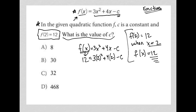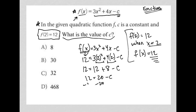Let's simplify. I have 12 equals 3 times 2 squared. 2 squared is 4. 3 times 4 is 12. So this becomes 12 plus 4 times 2 is 8, minus c. So 12 equals 20 minus c. Subtract 20 from both sides: 12 minus 20 is negative 8. So I have negative 8 equals negative c.